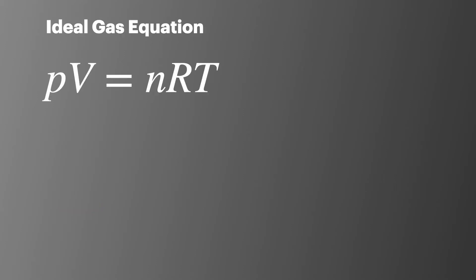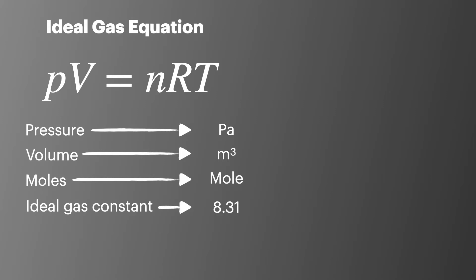When using the ideal gas equation, it's important to make sure that your values are in the correct unit. Pressure must be in pascals. Volume is in meters cubed. Moles will of course be in moles. And the ideal gas constant, which is 8.31 and is always given to you in exams, has the unit of joules per mole per kelvin. The temperature must be in kelvin.